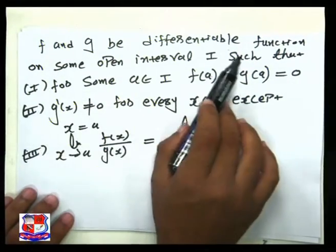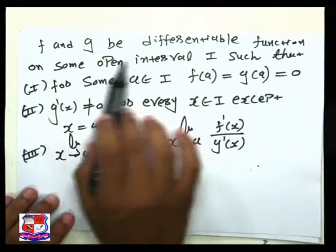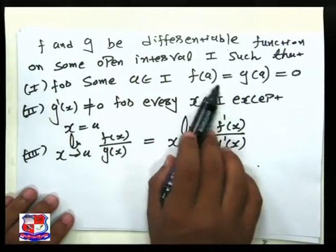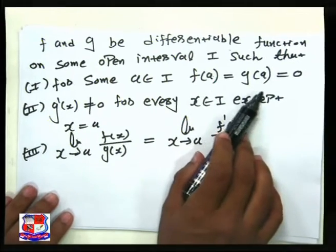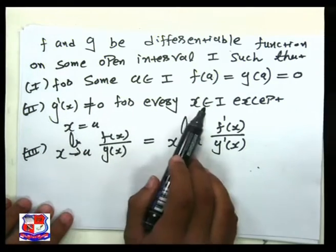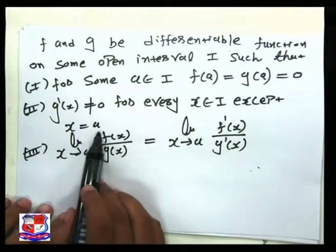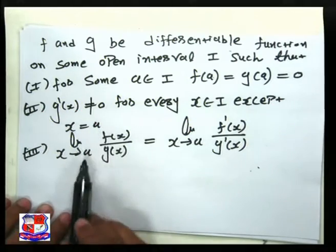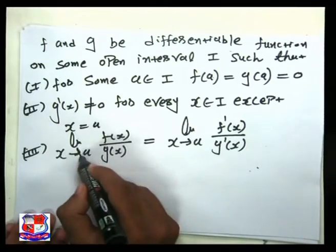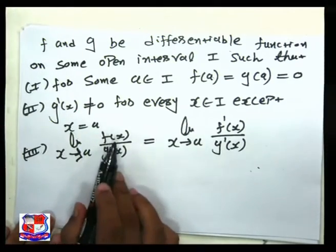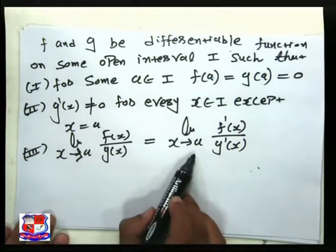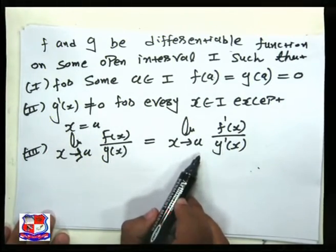To repeat: if f and g are both differentiable functions on some open interval I, such that for some a in I the values f(a) and g(a) are both 0, and if g'(x) ≠ 0 for every x in I except x = a, then we can apply the rule: the limit as x tends to a of f(x)/g(x) equals the limit as x tends to a of f'(x)/g'(x).